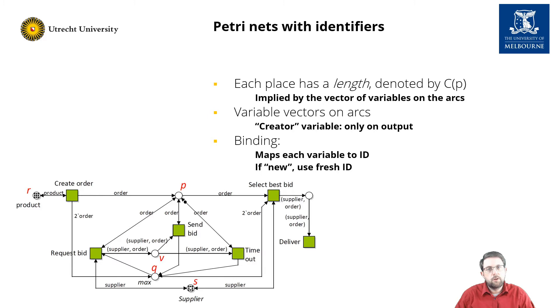We use Petri nets with identifiers to model the processes. A Petri net with identifier is an extension of new nets. In the net, each token carries a vector of identifiers, and each arc is inscribed with a variable vector. The size of the variable vector implies the coloring of the place. So place p contains tokens with vector size 1, and place v contains tokens with vector size 2.